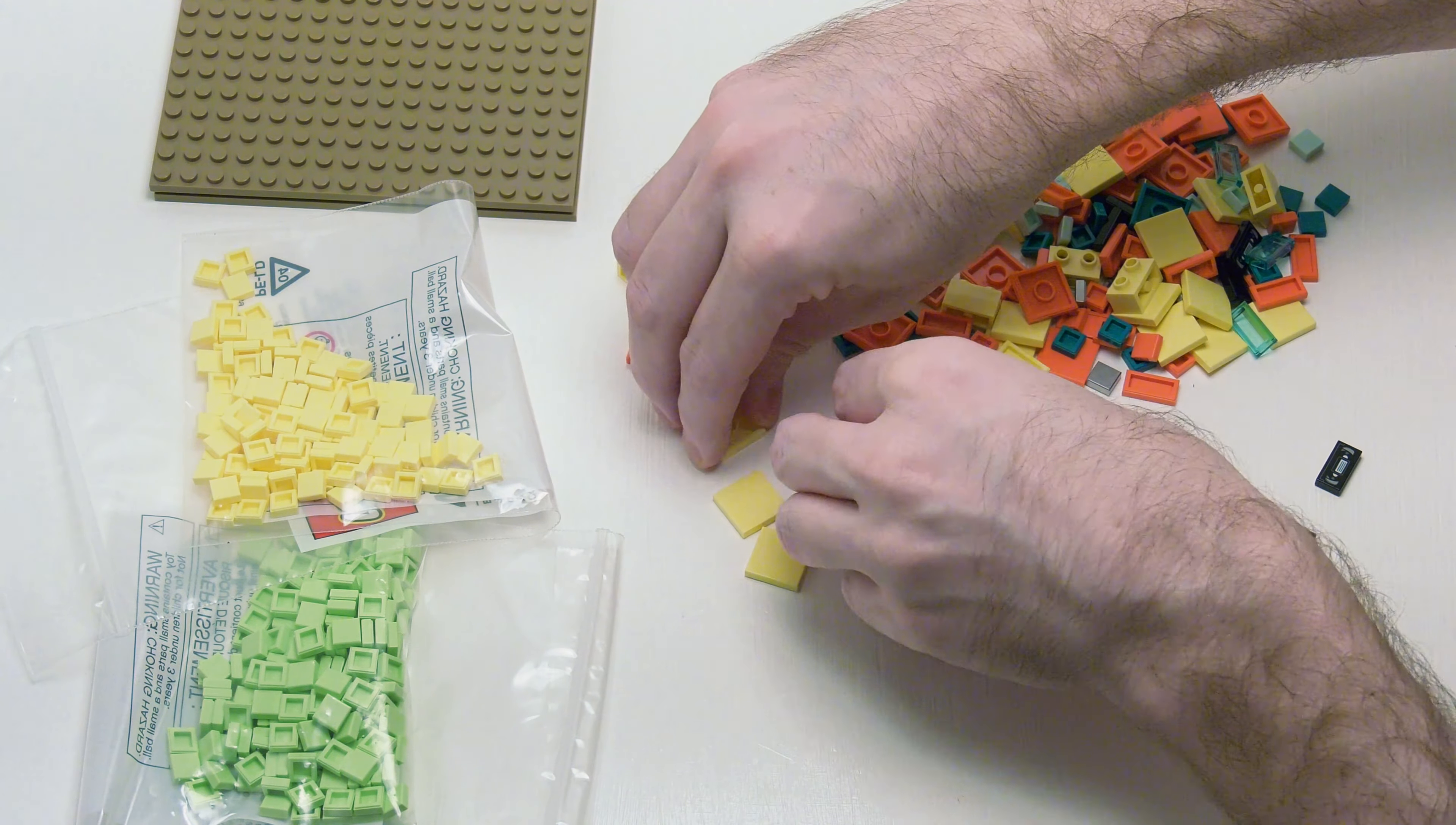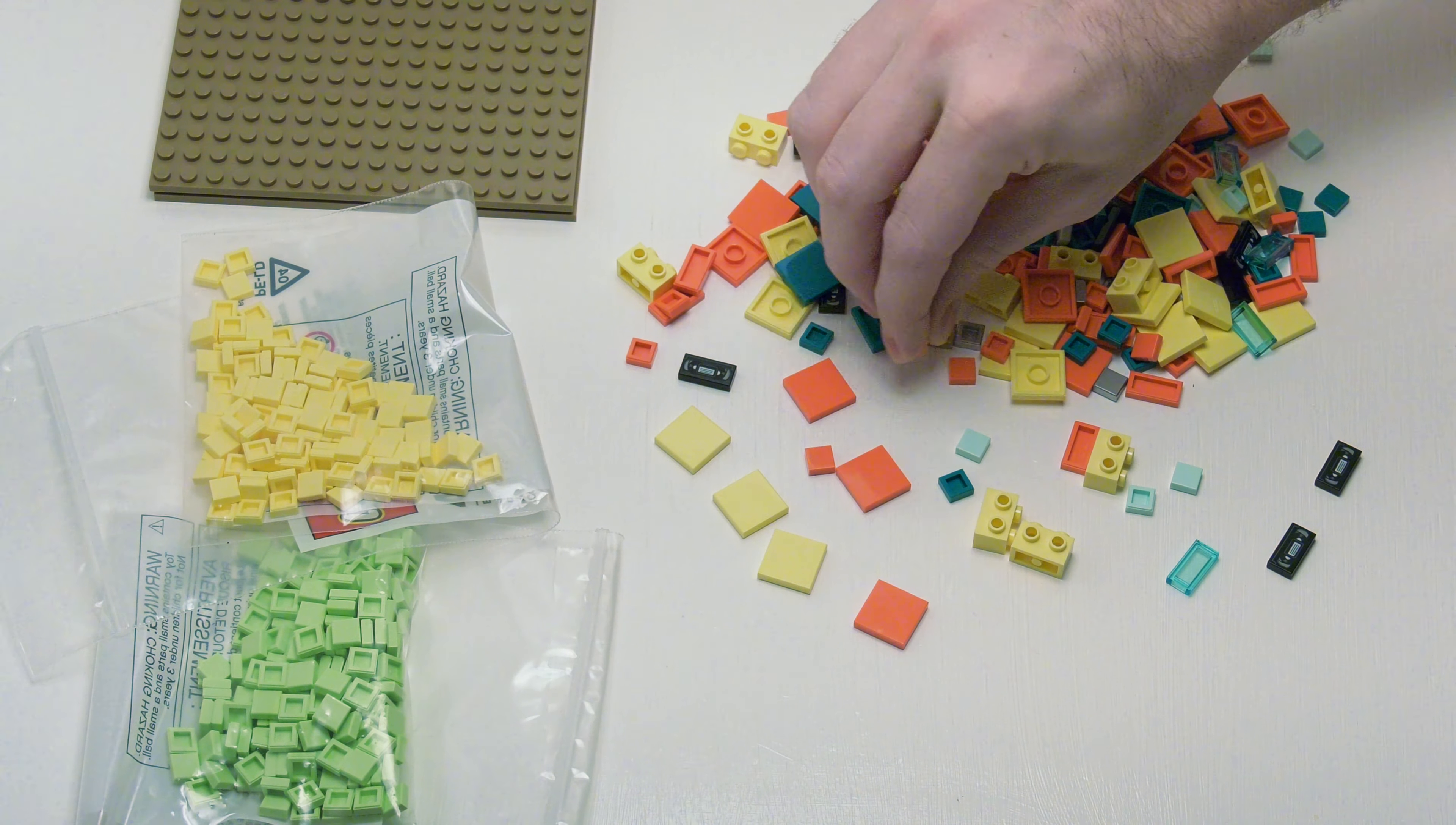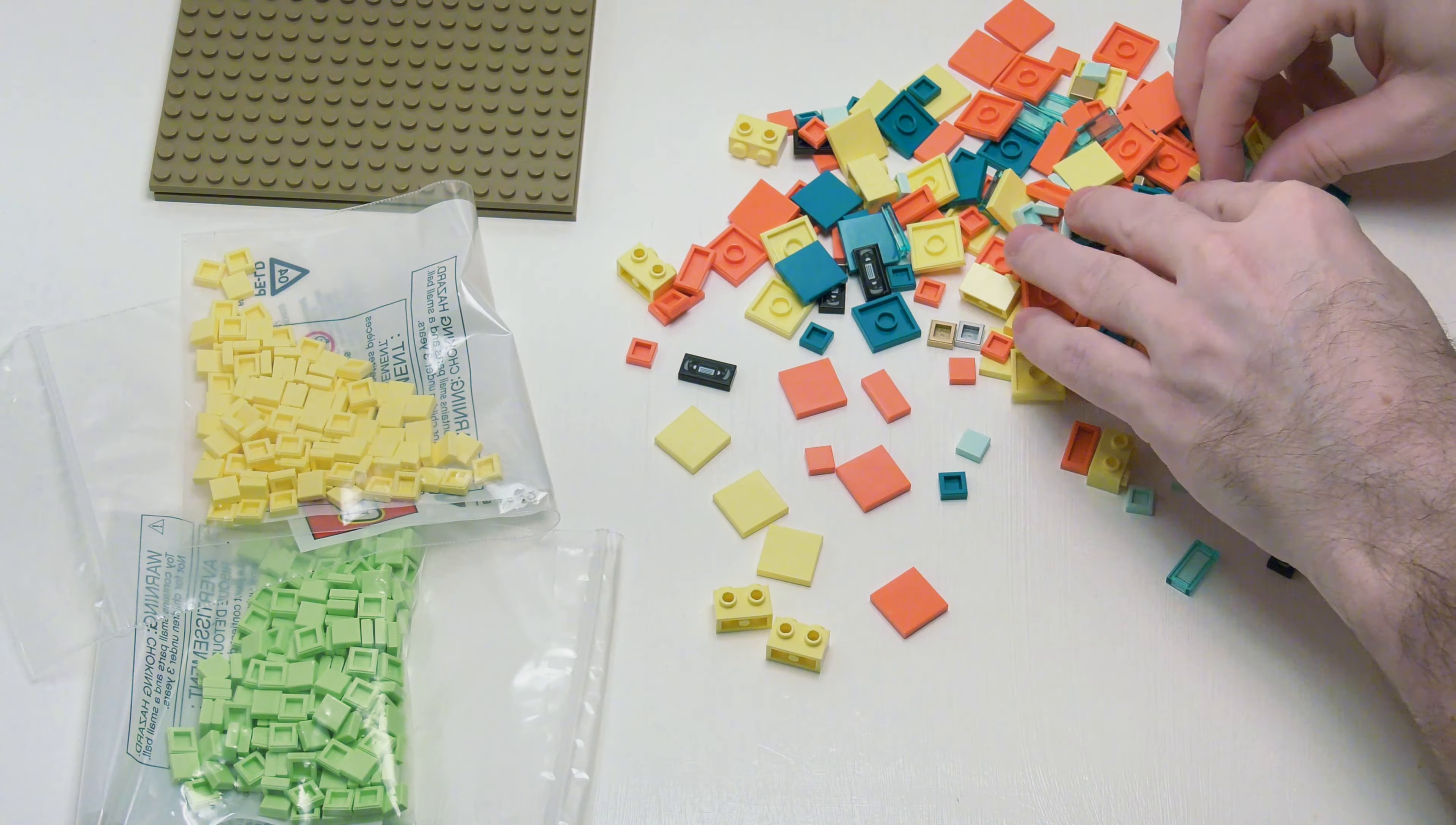And of course I got some more coral 1x1s, 1x2s, and 2x2s. I also got the cool yellow 1x2 bricks with two knobs. These are good for hanging pictures on the wall and accessories, cupboards, and stuff like that.